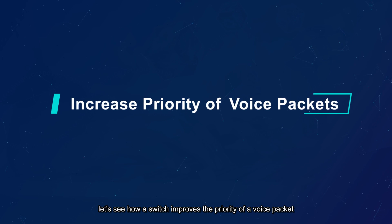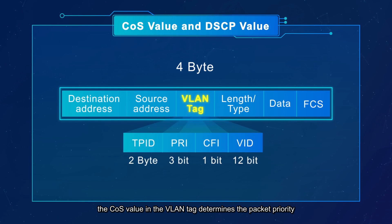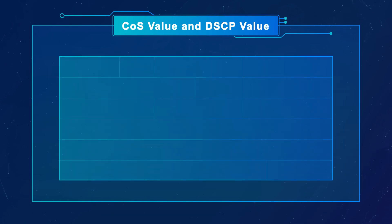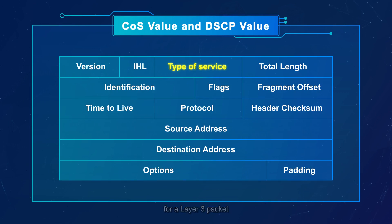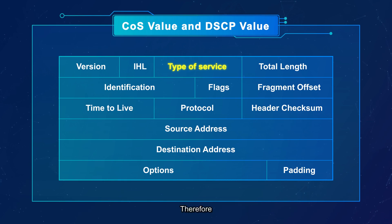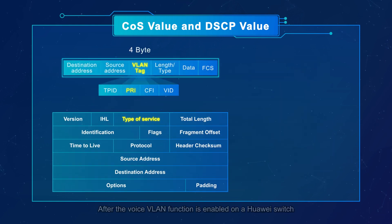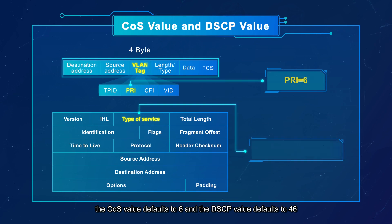Next, let's see how a switch improves the priority of a voice packet. For a Layer 2 packet, the CoS value in the VLAN tag determines the packet priority. In contrast, for a Layer 3 packet, the DSCP value in the IPv4 packet header determines the packet priority. Therefore, increasing the CoS value or DSCP value in a voice packet increases the voice packet priority. After the voice VLAN function is enabled on a Huawei switch, the CoS value defaults to 6 and the DSCP value defaults to 46.